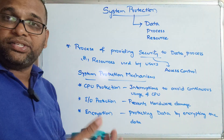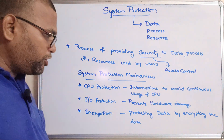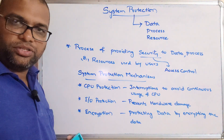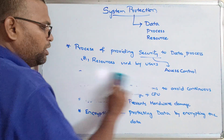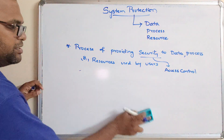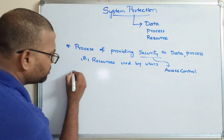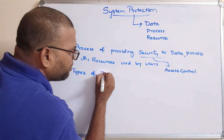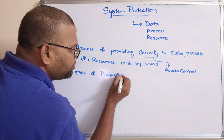So these are the system protection mechanisms: authentication, authorization, access control, file permissions, memory protection, CPU protection, IO protection, and encryption. Now we will see the different types of security protections. Types of protections — the first one is hardware protection.